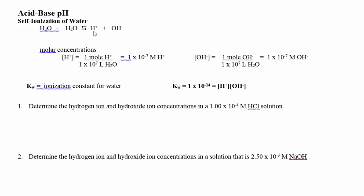Water will break into hydrogen and hydroxide. Notice it's a double arrow — that means you're not getting a lot of hydrogen and hydroxide. It is a very weak electrolyte. It's why they tell you to get out of the water when you have an electrical storm, because it will conduct electricity since it is making hydrogens.